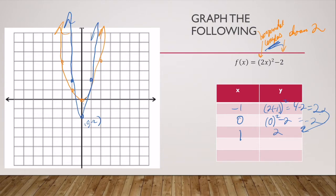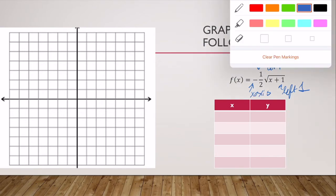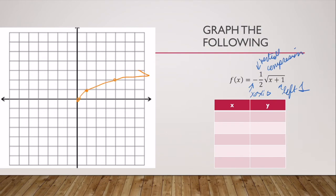Last but not least, let's take a look at f(x) = -½√(x + 1). This is shifted left one, and then we have a vertical compression because we're multiplying our function by a fraction where a is less than one. This is also reflected across the x-axis. Here's the parent function square root of x in orange — now let's graph our new function, which starts shifted to the left one.